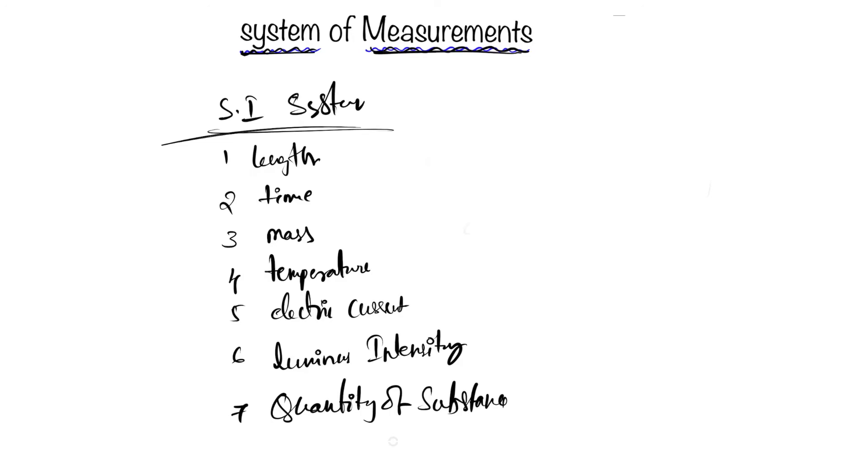I'll write the units for these seven basic quantities. You can find the article listing all the derived units for the SI system in the description. For length it's meter, for time it's second, and for mass it's kilogram.